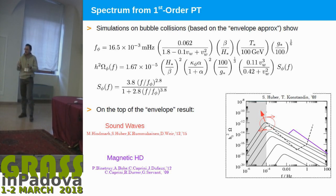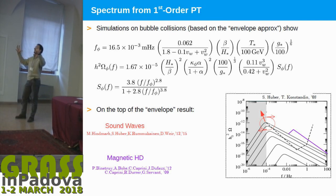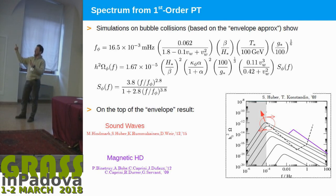Roughly speaking, it's an effect of the plasma. The expanding bubbles create turbulence, and this turbulence is an energy density changing with time — so potentially generating gravitational waves. The plasma also has coherent motion that persists after the collision, which also generates gravitational waves.